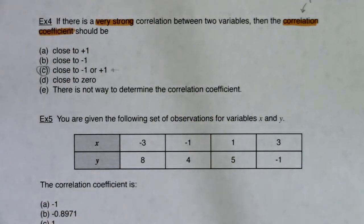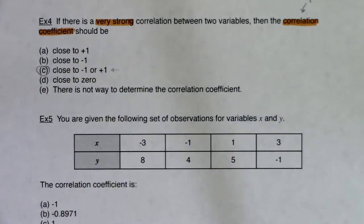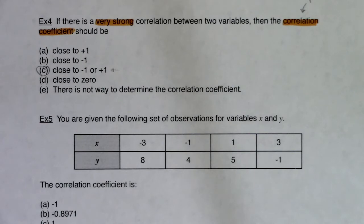There are two times when we know we have a strong correlation: when your r value is close to 1 or negative 1.